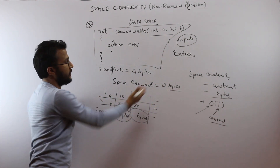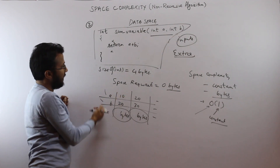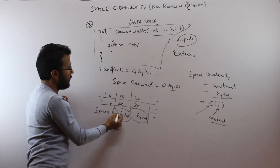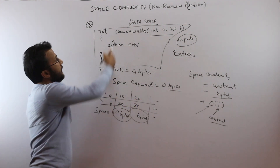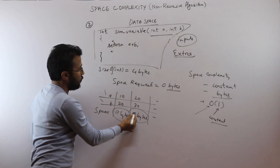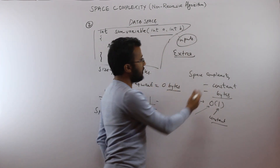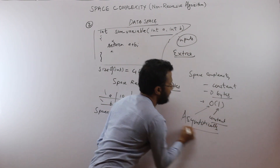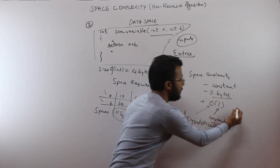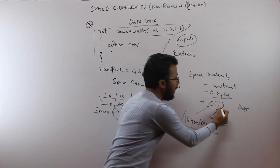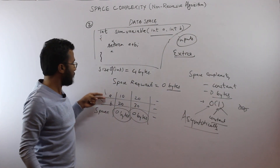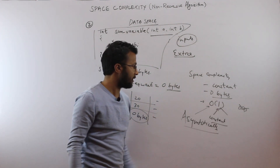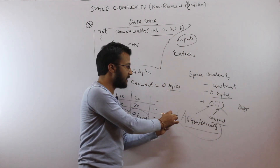We have not created any other variables in this particular function, so the space requirement is zero bytes. Whatever may be the value of a and b, we are not creating any other variable, so again it's zero bytes — constant space. Asymptotically we write this as O(1), not O(0). O(1) means it takes constant space — whatever may be the value of the input instance, the space requirement is always the same.